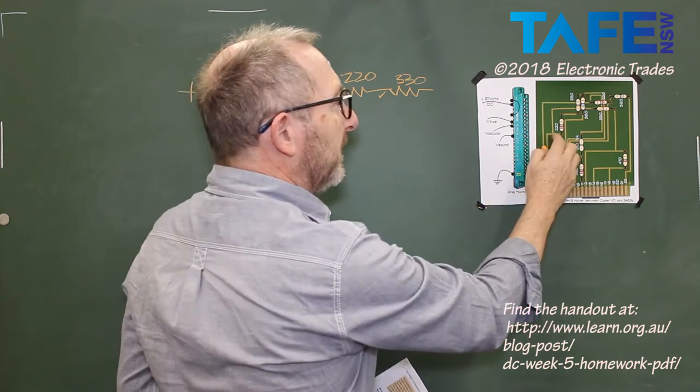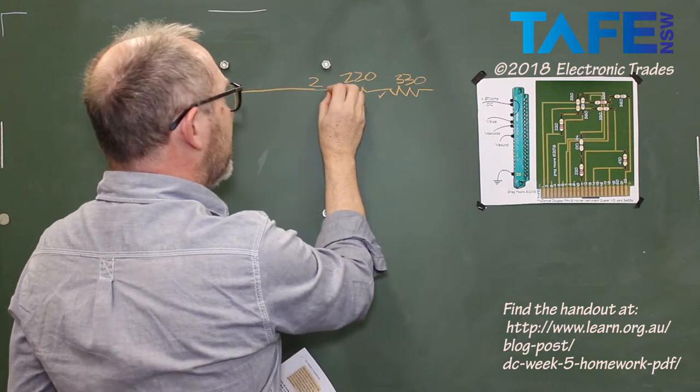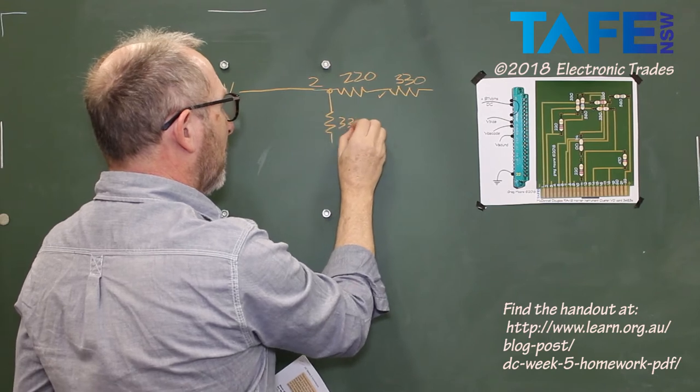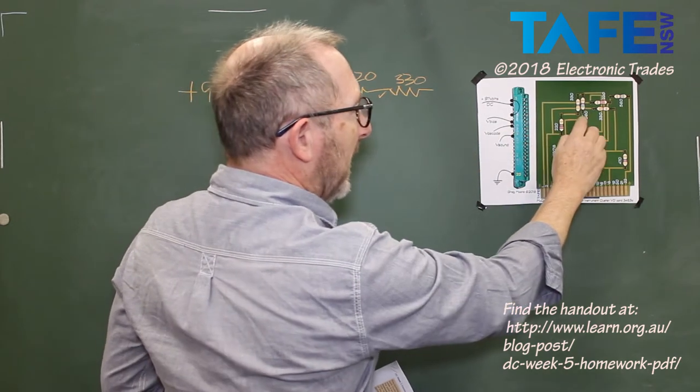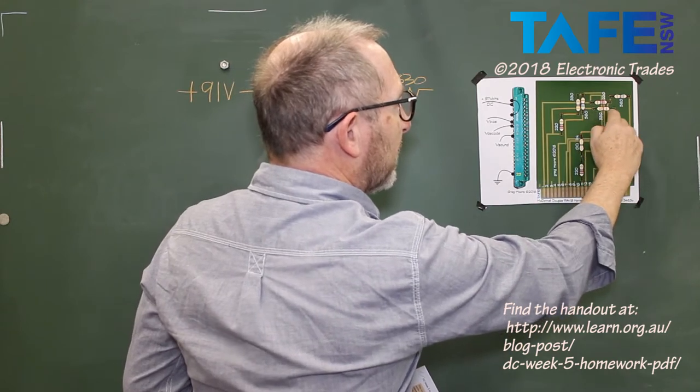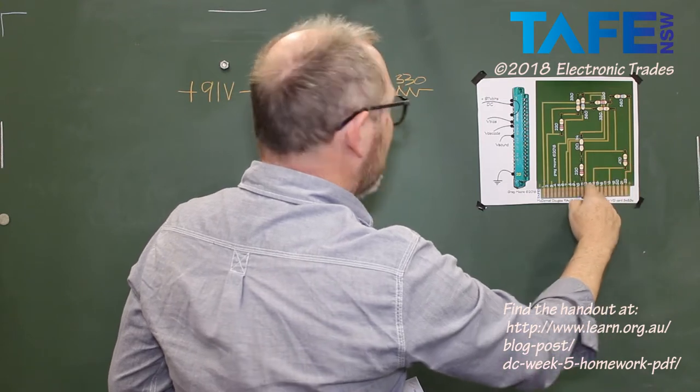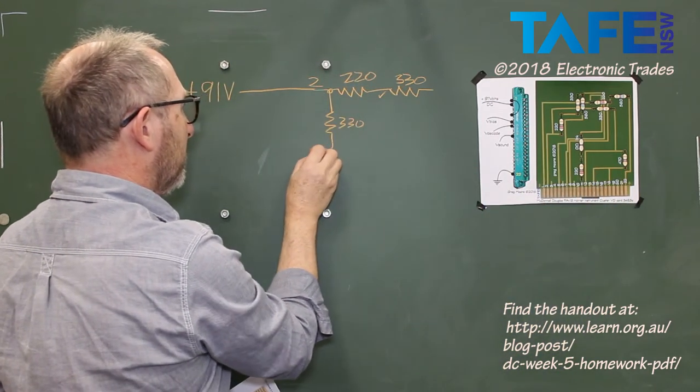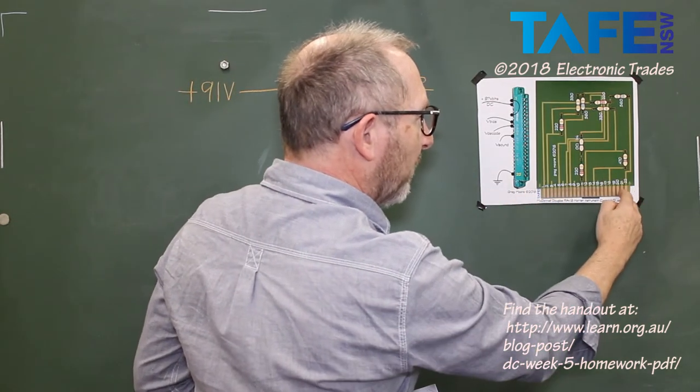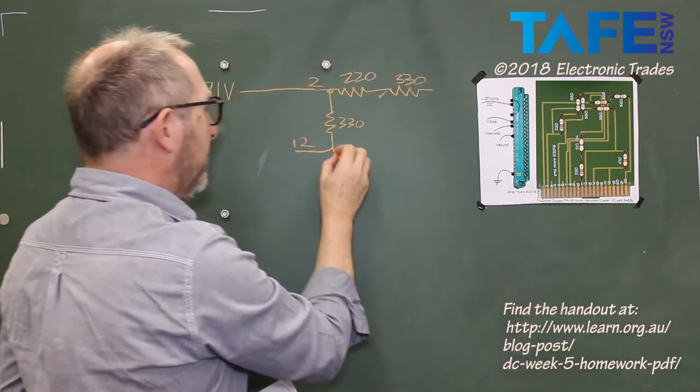There's another wire coming out there which goes to a 330 ohm resistor. And that 330 ohm resistor looks like it just jumps across three tracks. Then comes down, comes out of pin 12. And then it also goes through a 470 ohm to pin 14 and pin 18.